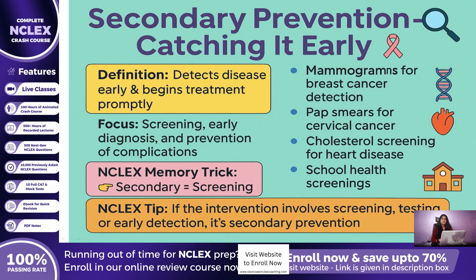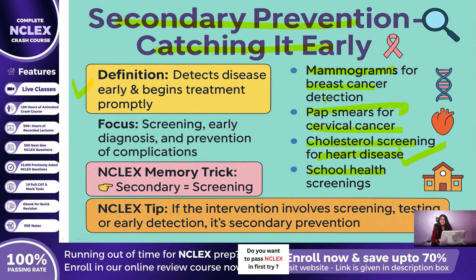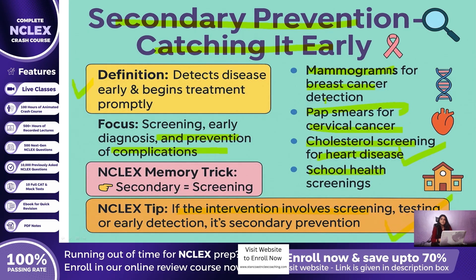Secondary Prevention — catching it early. What if the disease process has already started silently? This is where secondary prevention comes in. The goal is early detection and prompt treatment so that the disease does not progress into something worse. For instance, mammograms to detect breast cancer early, pap smears for cervical cancer, blood pressure checks for hypertension, and cholesterol screening for cardiovascular disease are all secondary prevention. Nurses conducting school health screenings or organizing a community health fair with free blood glucose checks are also performing secondary prevention. NCLEX Tip: If the intervention involves screening or early diagnosis, it is always secondary prevention. Remember, secondary equals screening.